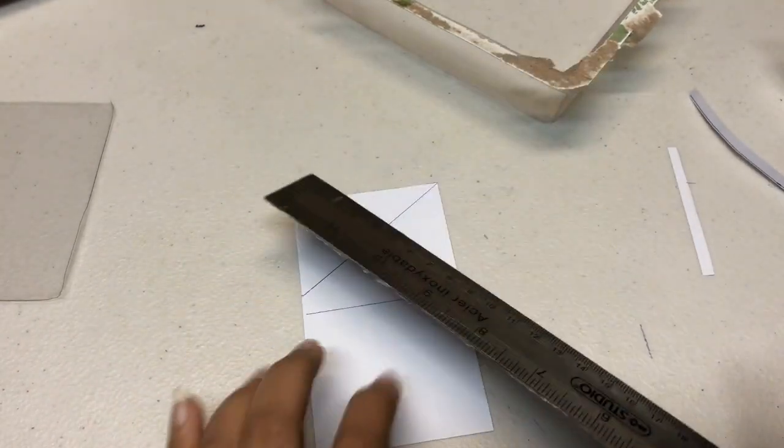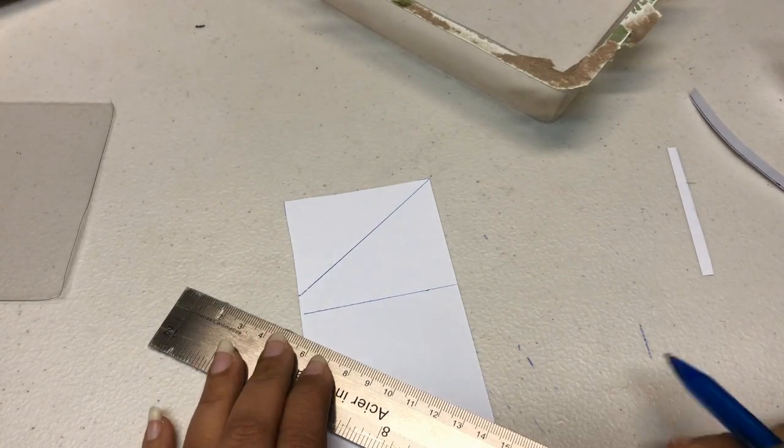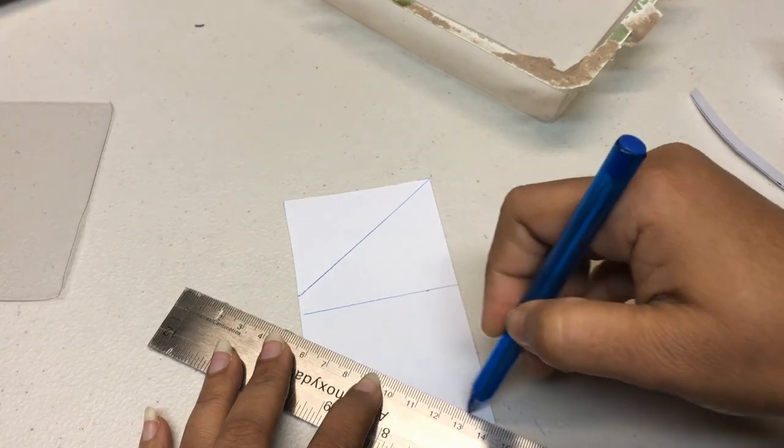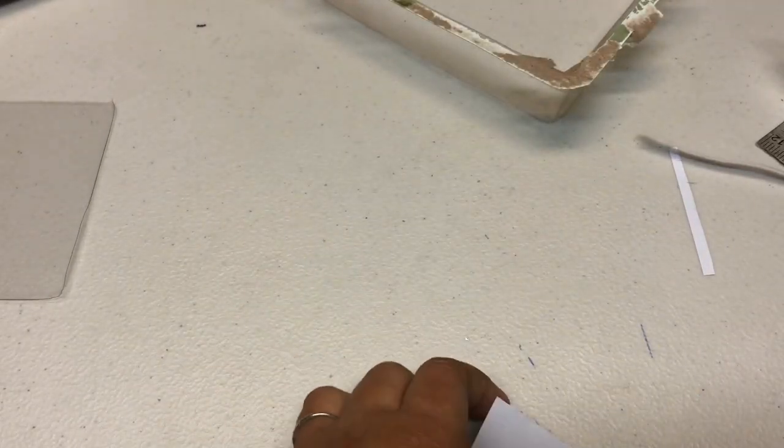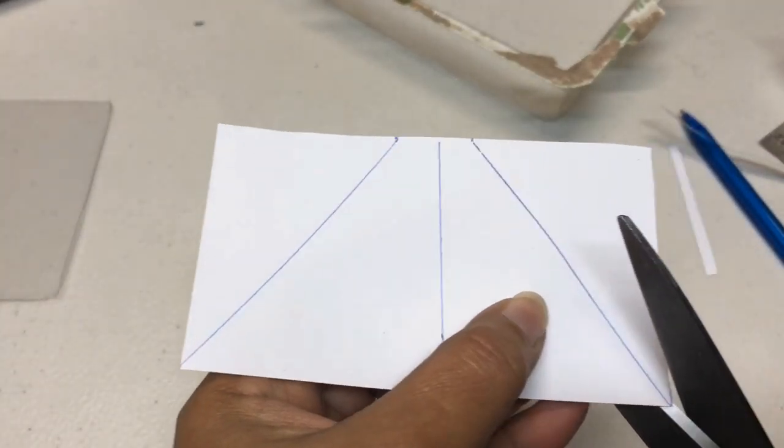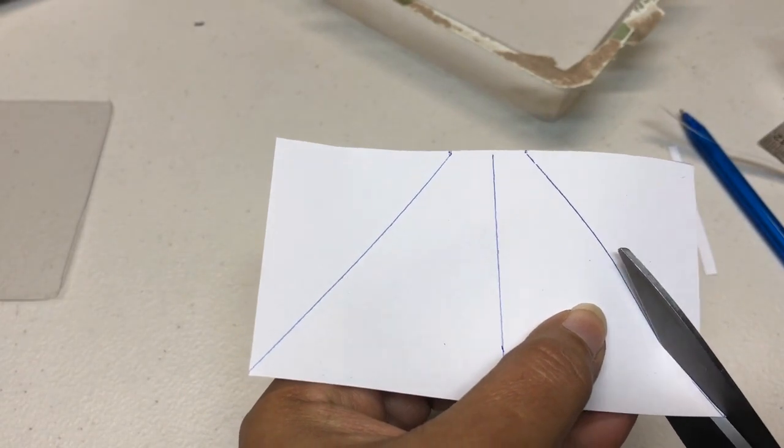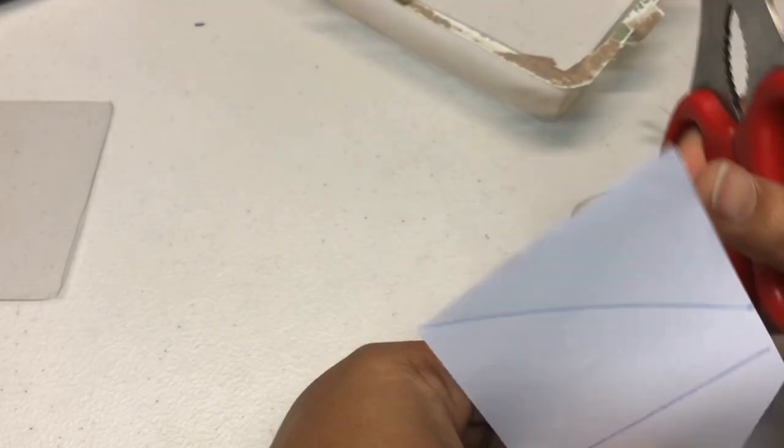Now join the bottom corner and the place where the line ends, where the 2 centimeter line ends. Similarly join the other side also. Now you get a trapezium-like shape. You're going to cut off those excess portions. We need only the trapezium shape as our template.